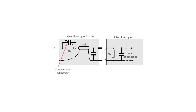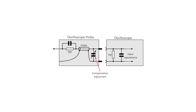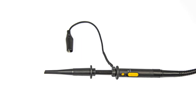To compensate for the scope capacitance, a capacitor is placed across the 9 megaohm resistor in the probe. Adjustment is provided so that the correct capacitance potential divider ratio is obtained to give a flat response. The adjustment can be made either at the tip of the probe or at the point where the probe connects to the scope. A small adjuster will be seen on the probe and this is normally very obvious.